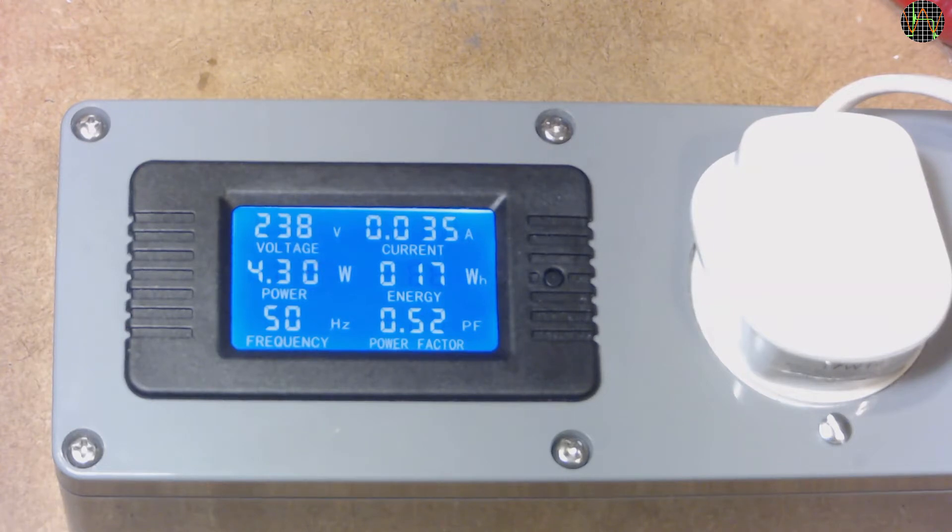However, the power factor is about 0.52. This means the apparent power is double that at 8.3 volt-amperes. I discussed this topic and the implications if you are on a smart meter in a previous video which I link in the description below.